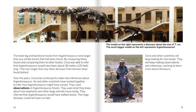This huge dinosaur could not have run fast. The model on the right represents a dinosaur about the size of T-Rex, while the much bigger model on the left represents Argentinosaurus. Correa and other scientists will keep looking for new fossils, making observations and inferences, working to learn more about dinosaurs.